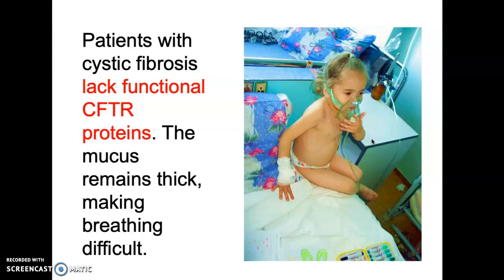Here's another picture of a little girl who also has difficulty breathing. They lack the functional CFTR protein. If they lack that protein, chlorine will not move. And if chlorine doesn't move, water doesn't move. And if water doesn't move, mucus is thick.